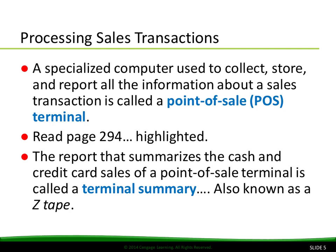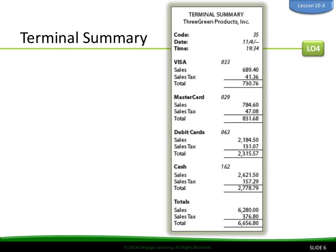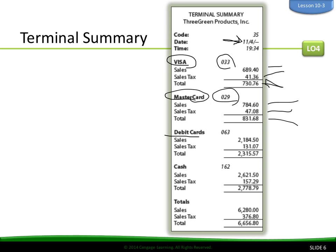The report that summarizes the cash and credit card sales of a point-of-sale terminal is called a terminal summary, also known as a Z-tape. Here's an example of a terminal summary. We have the date, time, Visa with account number and total, broken up with sales tax and sales. MasterCard, account number, total, sales tax and sale. Debit cards, cash — and then they total it all up.